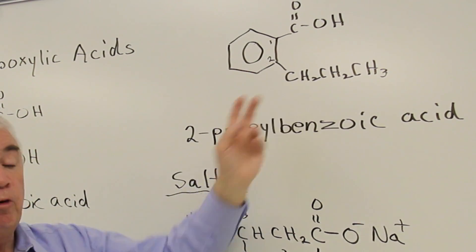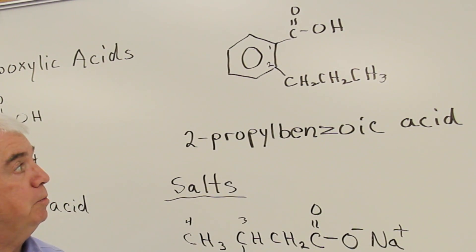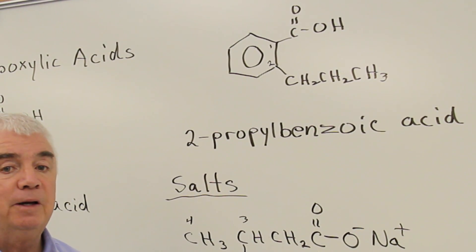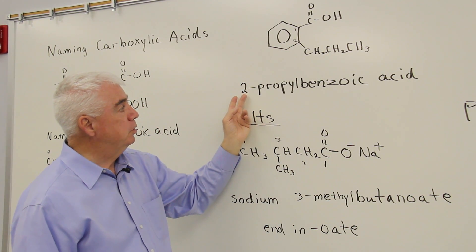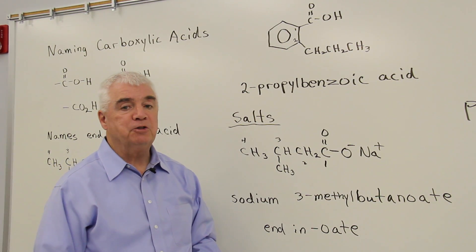That means that we've got a group attached at position two. It's a three-carbon group, so it's propyl. And it's at position two, so it's 2-propylbenzoic acid.